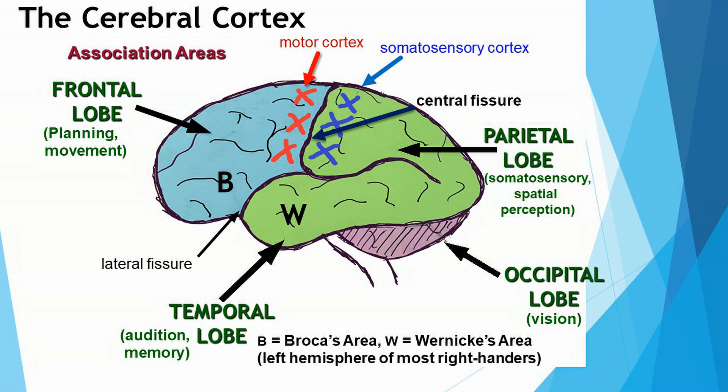Another interesting piece of information is that if you are right-handed and your speech centers are in your left hemisphere, there are comparable structures in your right hemisphere that are not important for understanding speech, but they do let you interpret sounds. They help you to recognize the sound of a door opening or closing, or footsteps walking across the floor — just non-speech sounds.